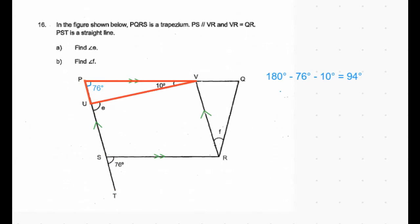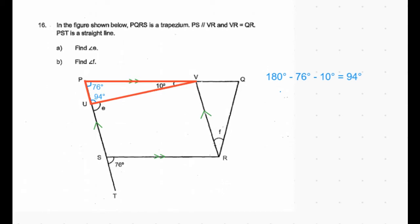Now consider triangle PVU. The sum of angles inside a triangle is 180 degrees. We know two angles are 76 degrees and 10 degrees, so the third angle is 94 degrees.